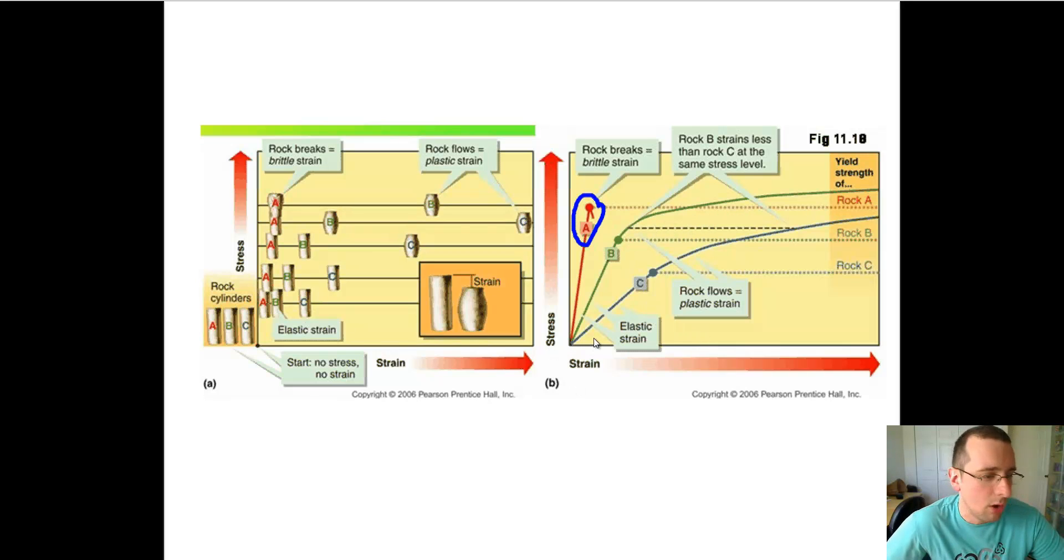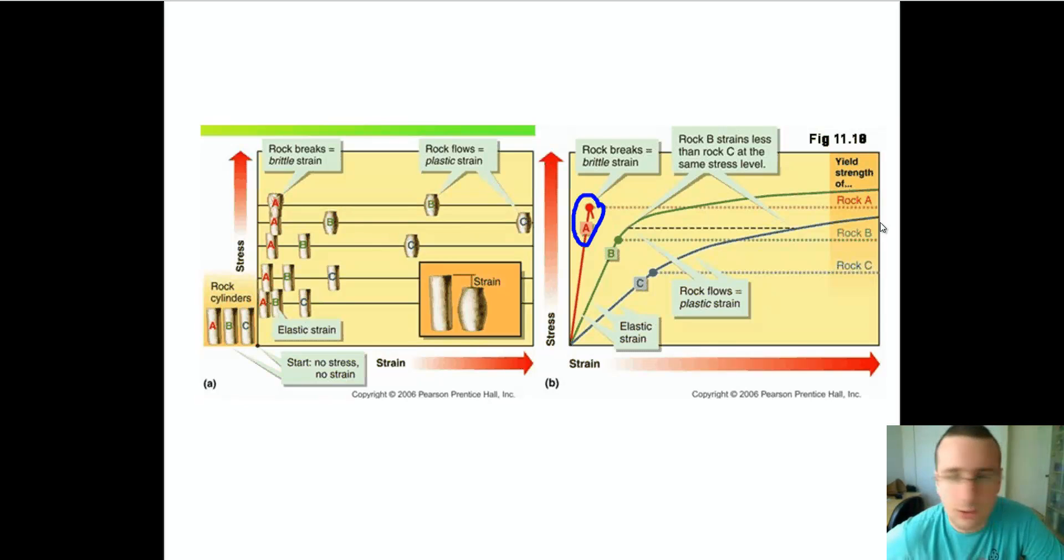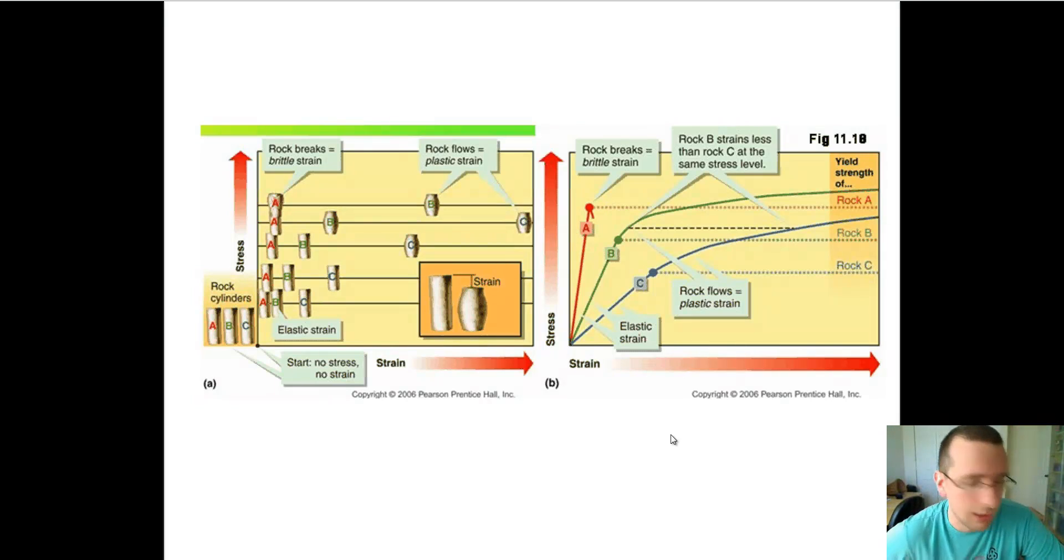And rock C, on the other hand, it's the most plastic of them all. It's the slowest to change and resist that strain for a long period of time. And it actually bends quite a lot and does not return to normal after the strain or stress is actually removed. And so you can see how different kinds of rock can react different to different amounts of stress over time.